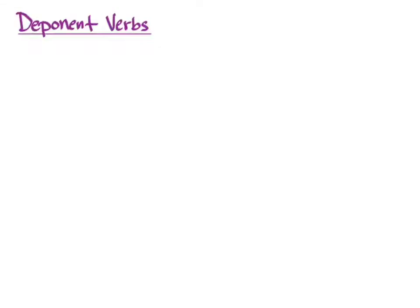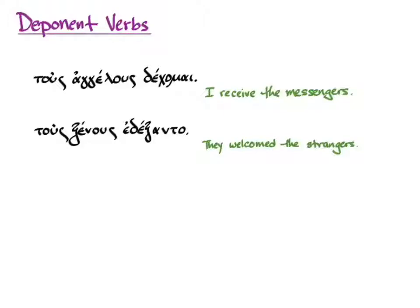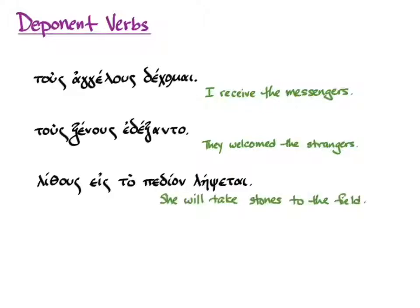Let's try a few examples. For the sentence tous angelous dechomai, we translate it with the active meaning of dechomai even though it looks middle or passive: 'I receive the messengers.' For tous xenous edexanto, that means 'They welcomed the strangers' — third person plural, aorist indicative — that middle form is simply how Greek expresses this particular verb. And lithous eis to pedion lepsetai uses the second principal part of lambano and means 'She will take stones to the field.'